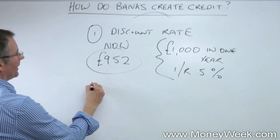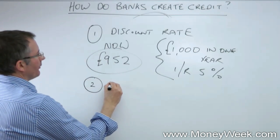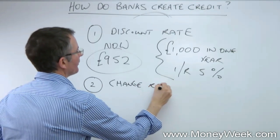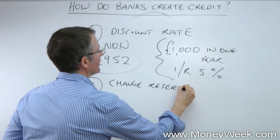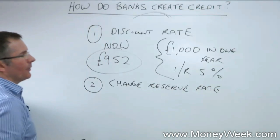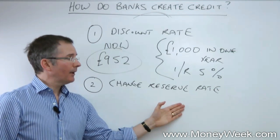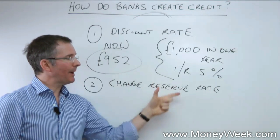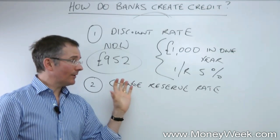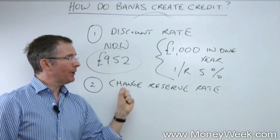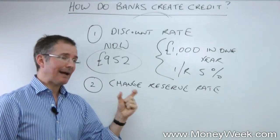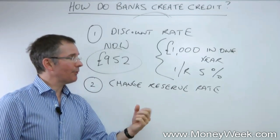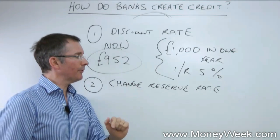The second thing a central bank can do is change the reserve rate. If you make banks hold back more money — if you up the reserve rate from ten to twenty percent — you instantly shrink, potentially, your monetary base. That's a pretty blunt tool and not done very often. But you can see that under fractional reserve banking, the fraction matters: creating a thousand pounds with a rate of ten percent versus five hundred pounds with a rate of twenty percent. So that's tool number two.